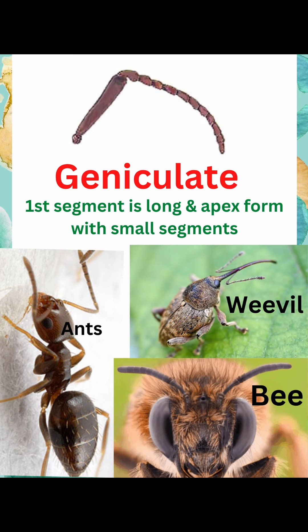Next is geniculate type antenna, which can be seen in bees, ants, and weevils. In this type, the first segment is long and the apex is formed with small segments.